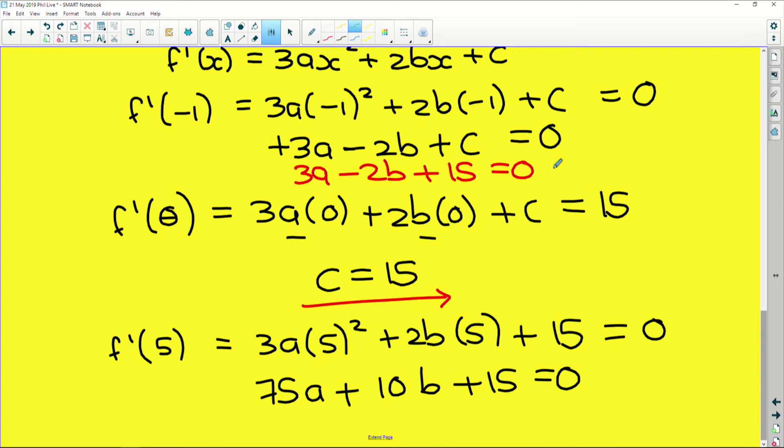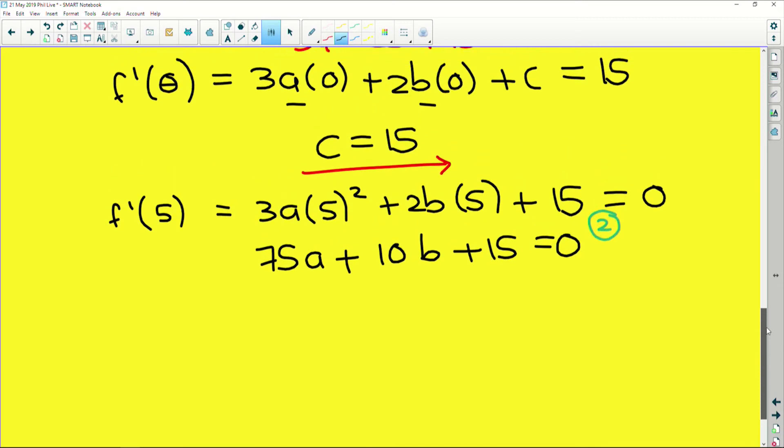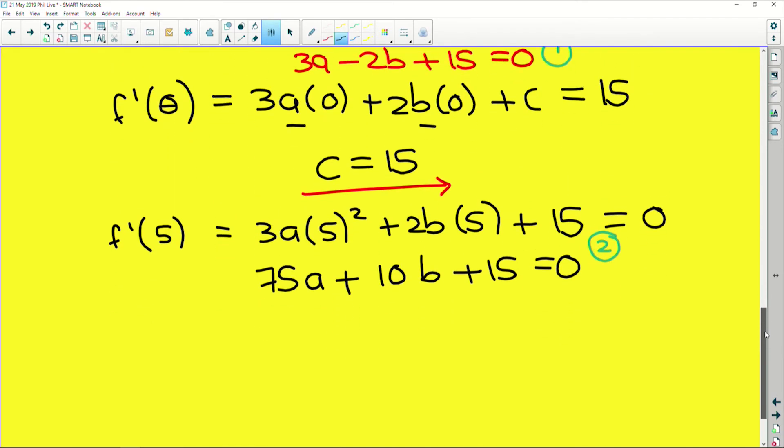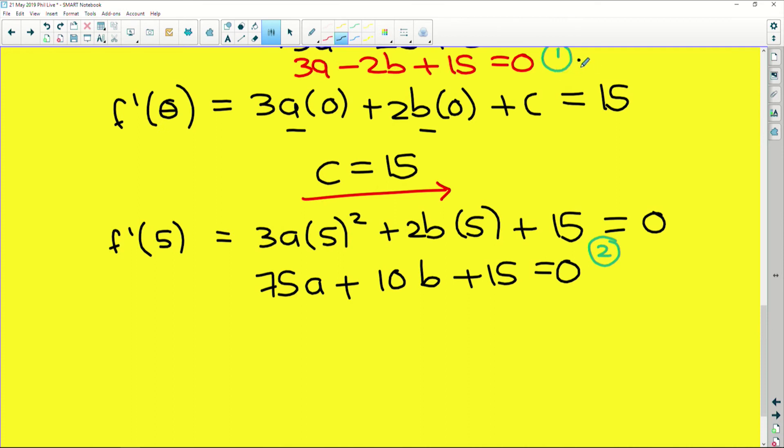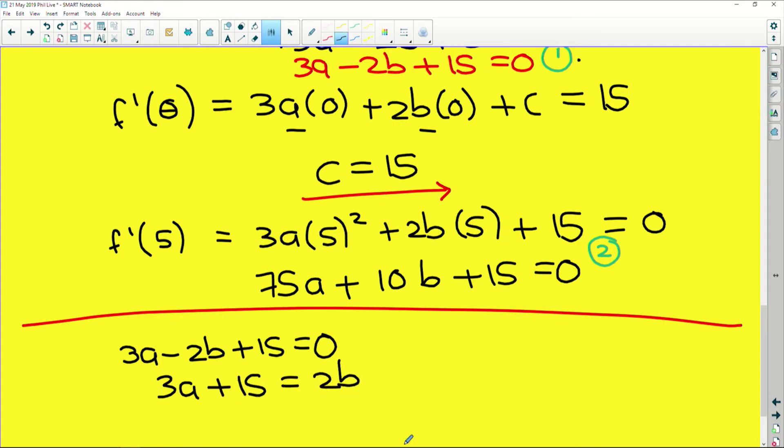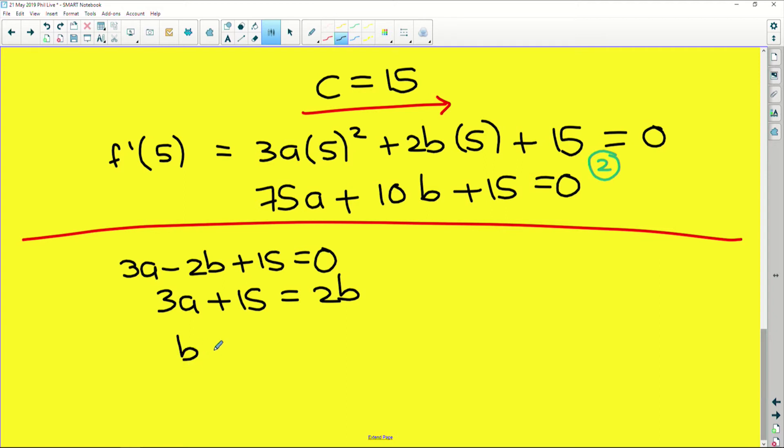So now this ties into what I was saying earlier. We have two different variables, which means we need two simultaneous equations. Okay, so I'm going to try and get both of these equations in terms of b. So if we look at equation one from up here, we had 3a - 2b + 15 equals zero. Let me rule off here so we know, which means that 3a + 15 is equal to 2b. And if we isolate b, we get b is equal to (3a + 15) all over 2. So that's simply manipulating our first equation into terms of b.